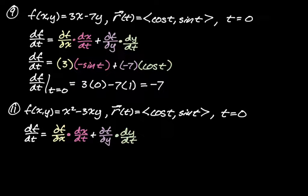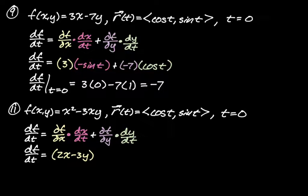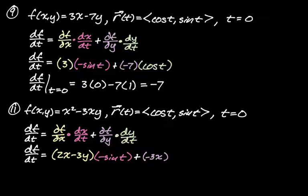The partial of f with respect to x — the derivative of x² - 3xy with respect to x — gives us 2x - 3y. And dx/dt: x = cos t, so the derivative is -sin t. The partial of f with respect to y: x² has no y's so that's zero, and the derivative of -3xy with respect to y is -3x. Then dy/dt: y = sin t, so dy/dt = cos t.